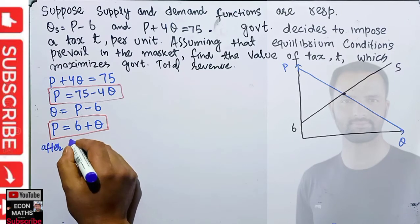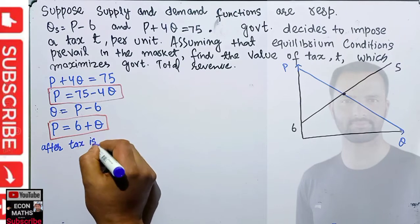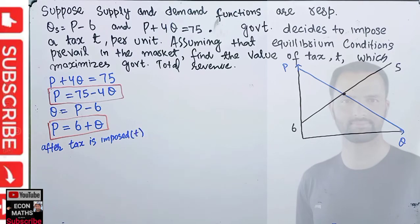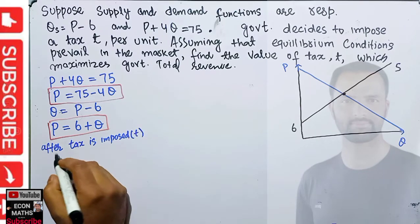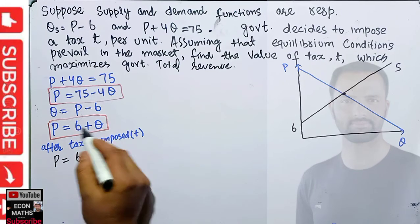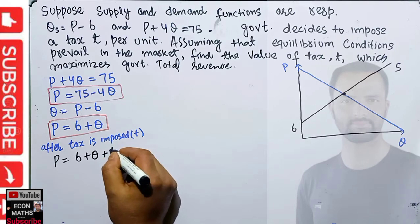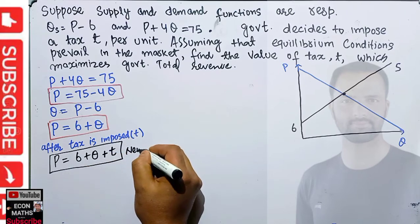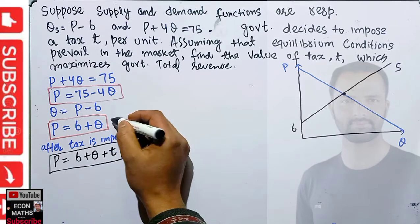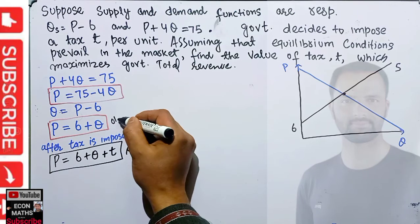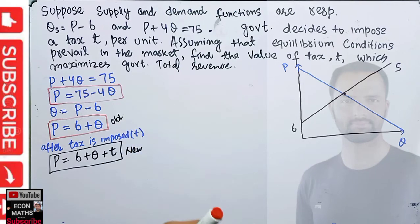When a per unit tax is imposed, the supply curve shifts upward. After the tax is imposed, the new supply function will look like: P = 6 + Q + T, where T is the tax rate. This is our new supply function. The old equilibrium was at the intersection of the original demand and supply.